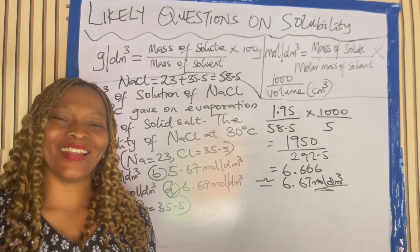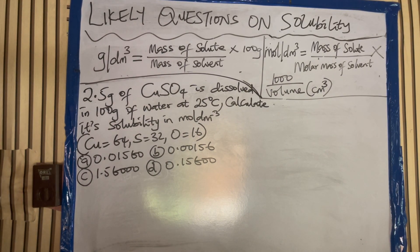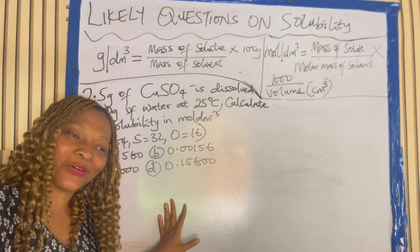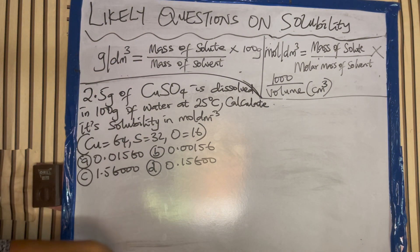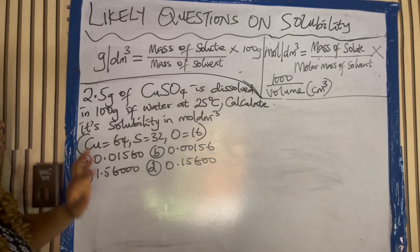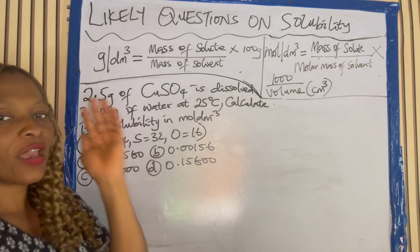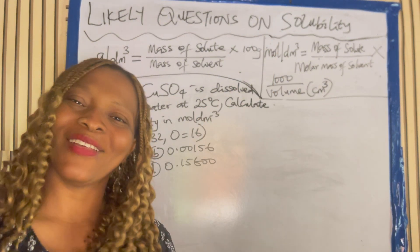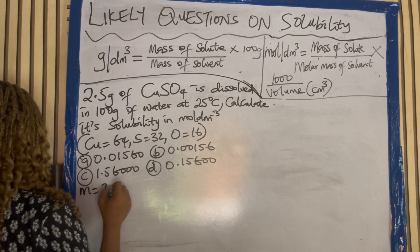Let's look at another question. Can you try this question? Very simple. 2.5 gram of copper sulfate is dissolved in 100 gram of water at this temperature. Calculate its solubility in mole per dm cube. Once you hear mole per dm cube, what comes to your mind? The second formula. Let's solve. The mass is 2.5 gram.